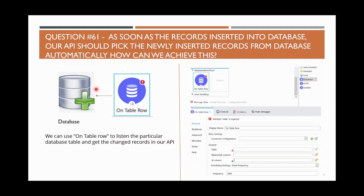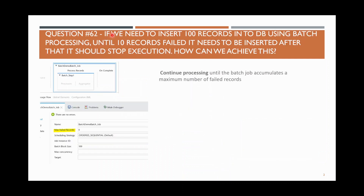The next question: you need to insert 100 records into a database table using batch processing. Until 10 records have failed, it should continue inserting. After that, it should stop execution. For example, you have 100 records to insert.